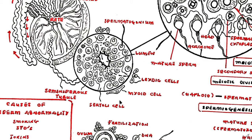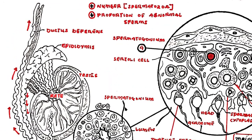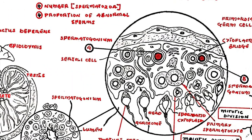Sertoli cells are also found in the seminiferous tubules and they produce a number of hormones. The spermatogonia that begin the process of spermatogenesis are called spermatogonia A cells.